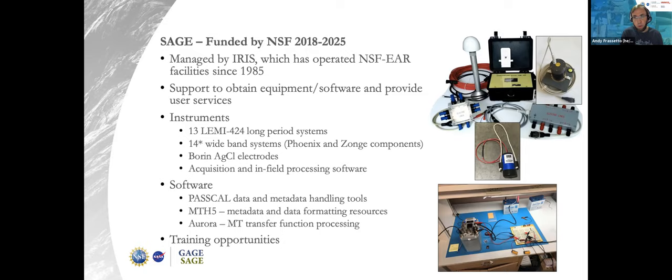We have silver chloride electrodes that are nontoxic and easier to move around. Those systems also include acquisition and in-field processing software to allow you to get some results in the field and optimize deployments. We are developing new community tools including exchangeable formats — MTH5 and Aurora, an open-source version of MT transfer function processing — as a starting point for inversions and earth analyses using MT time series. SAGE also supports some training opportunities.